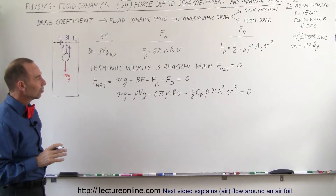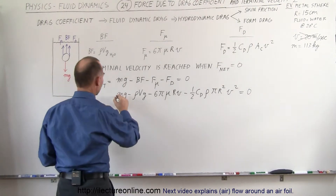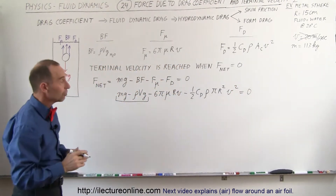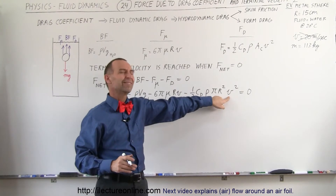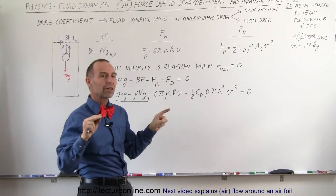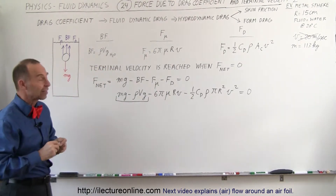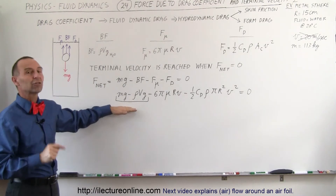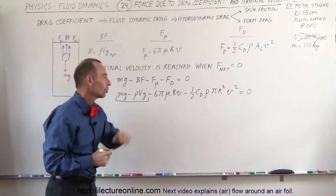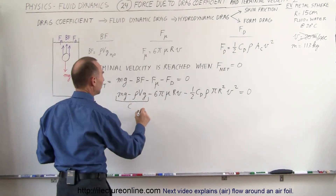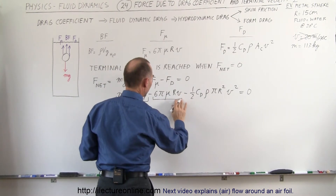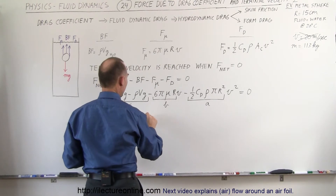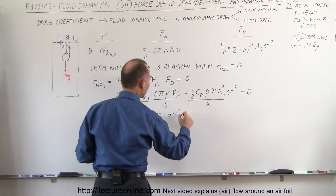Notice that this looks like a quadratic equation: the constant term, the variable to the first power, and the variable to the second power. The sign in front of the squared term is negative, which means the parabola opens downward and crosses the horizontal axis at two locations. We want to find those roots — that is where we'll find our solution.